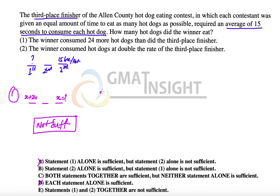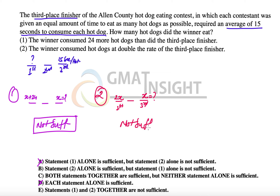Statement 2 says the winner consumed hot dogs at double the rate of the third place finisher. So if the third place finisher ate x hot dogs, then the winner consumed 2x hot dogs. But again, because x is unknown, Statement 2 alone is also not sufficient to answer the question, and option B is eliminated.